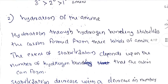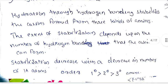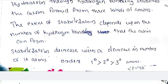The next factor is hydration of amine — hydration through hydrogen bonding. Hydrogen bonding stabilizes the cation formed from the three kinds of amines. The degree of stabilization decreases with a decrease in the number of hydrogen bonds.